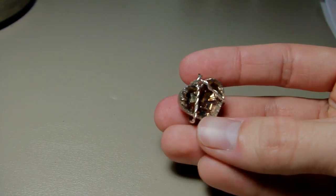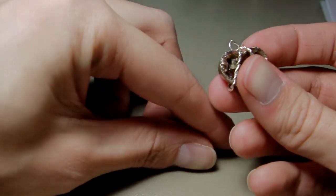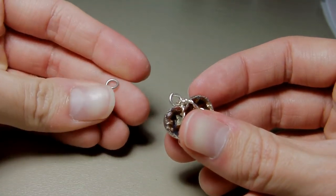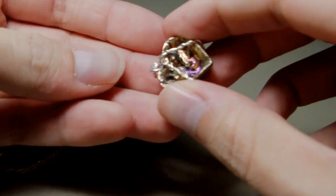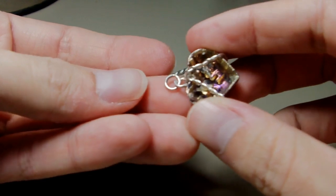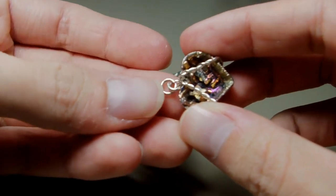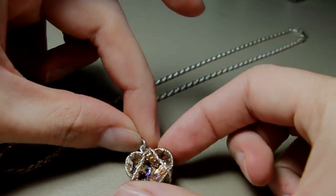So now I need to place the second jump ring in that one. And what that's going to do is allow the pendant to sit correctly on the necklace. Now that I've got both of the rings threaded on there, it's ready to go on to the necklace itself.